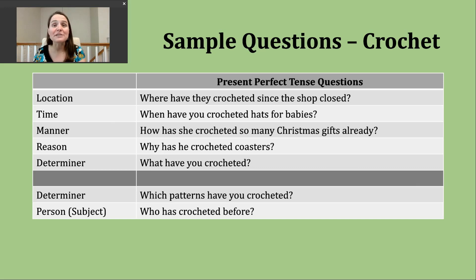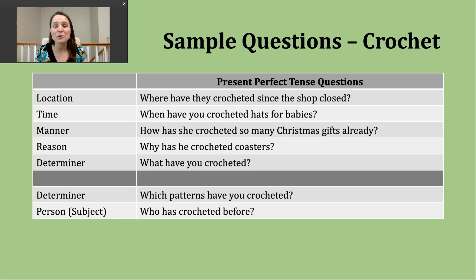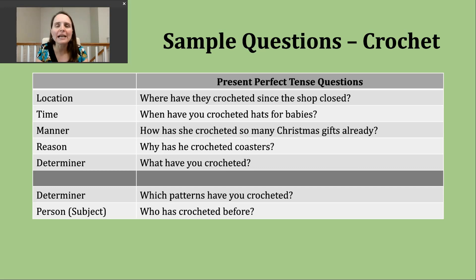What I hope you'll notice with these first five questions is that they all follow the pattern we talked about: question word, then have or has, then a subject, and then the participle form of our verb. The next two types of questions are a little bit different. Another way we can ask about an object or thing is with the question word which. But what comes immediately after which is another noun or phrase that gives someone options to choose from. An example: "Which patterns have you crocheted?" — so we're asking someone, maybe looking at a book or magazine, to pick from the patterns available.